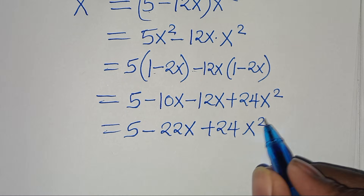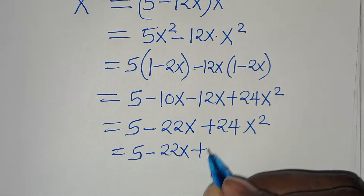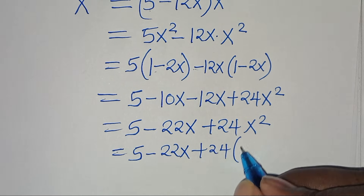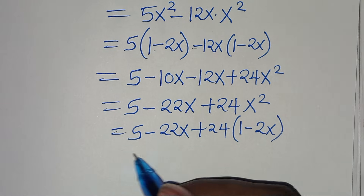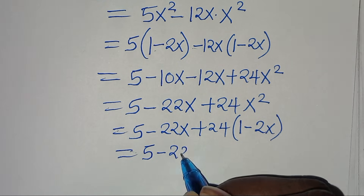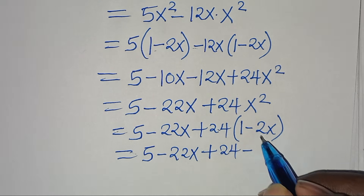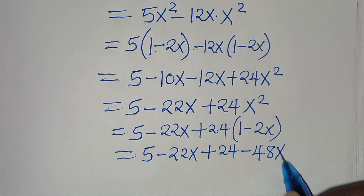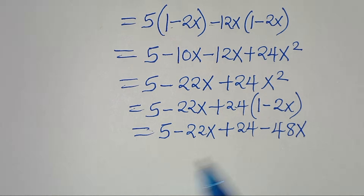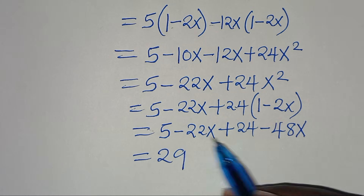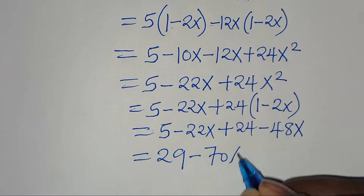We can substitute x squared by 1 minus 2x, so we have 5 minus 22x plus 24 multiplied by 1 minus 2x. Opening the parenthesis: 5 minus 22x plus 24 times 1 which is 24, minus 24 times 2x which is minus 48x. Now we have 5 plus 24 which equals 29, then minus 22x minus 48x, which is minus 70x.